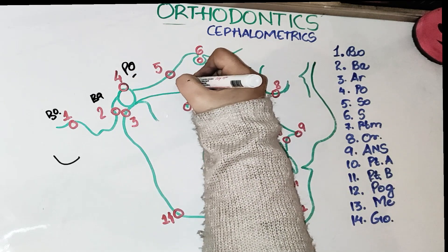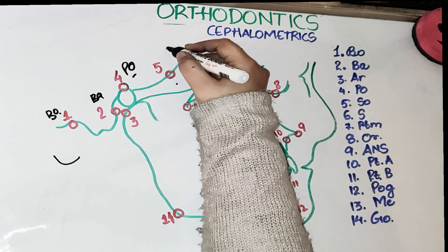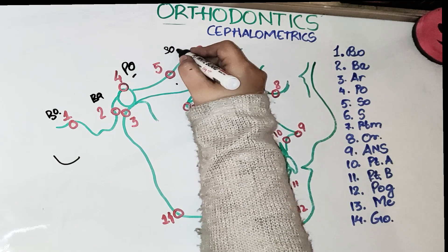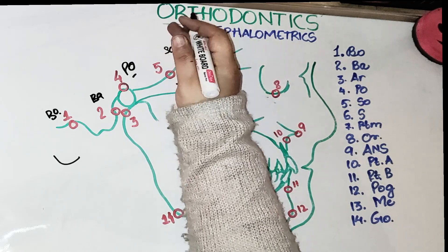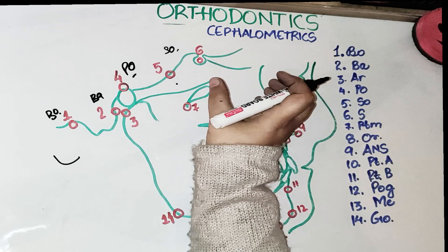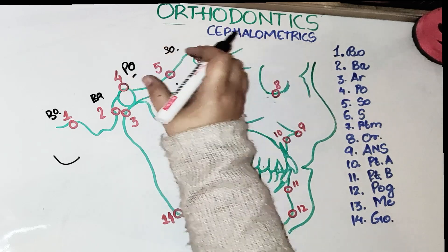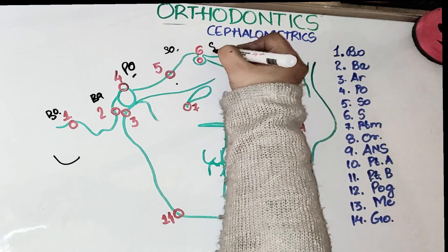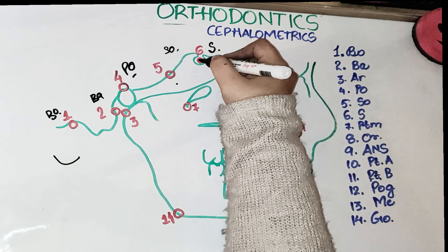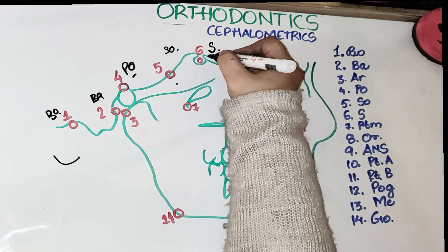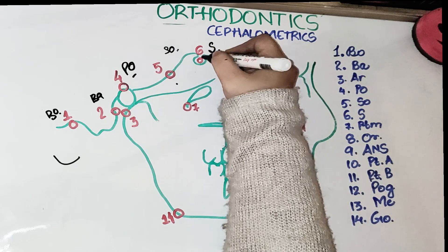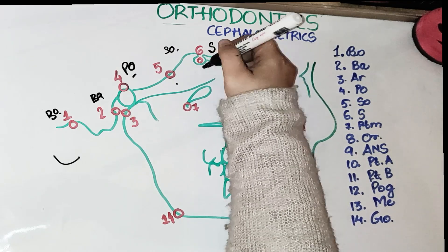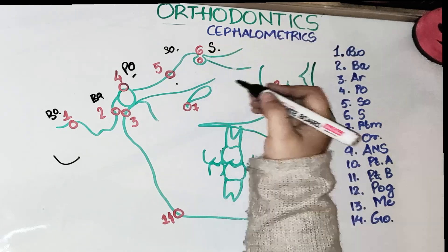The fifth point is the sphenooccipital synchondrosis, and it is the junction between the occipital and the sphenoid bone. The sixth point is Sella, and it is the midpoint of the sella turcica, which holds the pituitary gland.